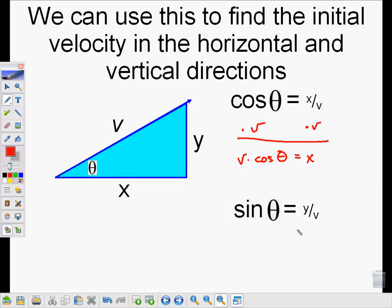Similarly, I can find the y component by multiplying both sides by v. And I get v times the sine of theta is equal to y. So I now have a way to quickly find the horizontal and vertical components of a projectile based on the angle and the magnitude of its velocity.